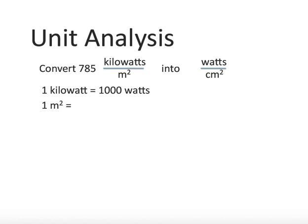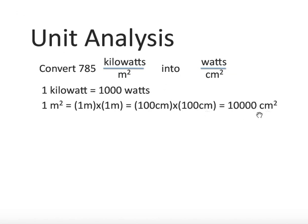What is 1 square meter? It's 1 meter times 1 meter. Imagine you have a square on the ground and you place two meter sticks at right angles to each other — there's your square meter. But a meter is 100 centimeters by 100 centimeters, which gives us 10,000 square centimeters. So our two conversions are: 1 kilowatt equals 1,000 watts, and 1 square meter equals 10,000 square centimeters.